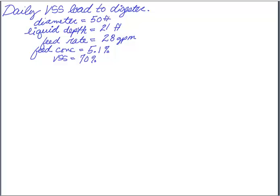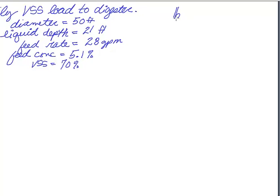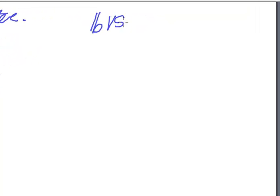I've got some feed rate coming in in gallons per minute with a feed concentration that is a certain percent volatile. Normally the feed rate to a digester is going to be expressed as pounds of volatile suspended solids or volatile solids per thousand cubic feet of digester space, or sometimes just as cubic foot of digester space.